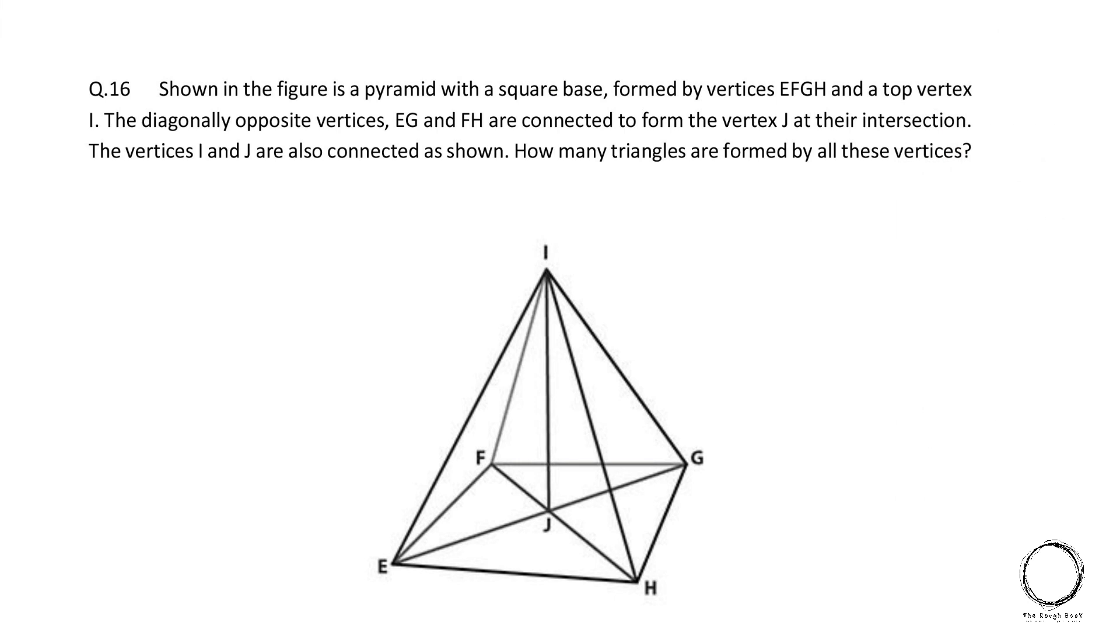Next, shown in the figure is a pyramid with a square base formed by vertices E, F, G, H and a top vertex I. The diagonally opposite vertices E, G and F, H are connected to form the vertex J at their intersection. The vertices I and J are also connected as shown. How many triangles are formed by all these vertices? So this is a similar kind of question which we went through before but that was just triangles on a 2D surface and this is a 3D object. So you need to find the triangles.